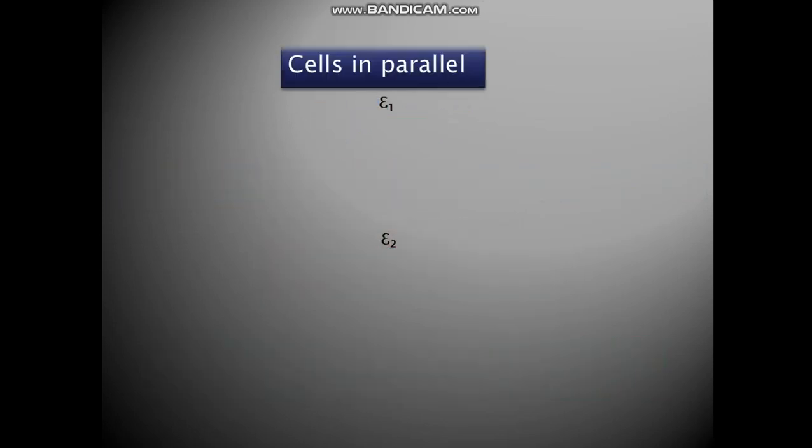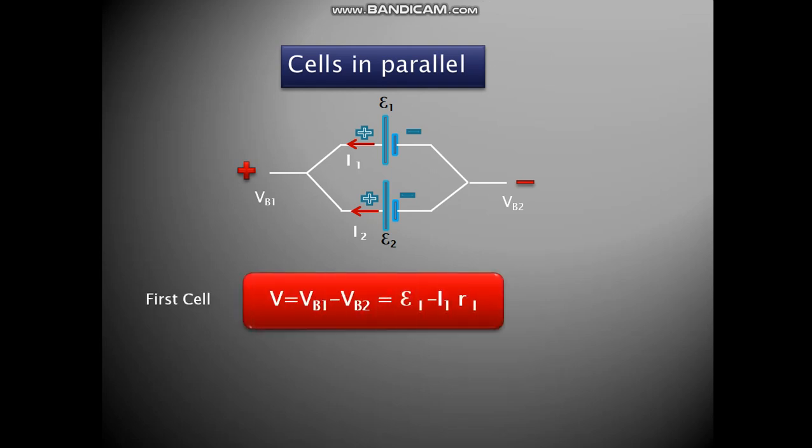Now let us connect them in parallel. We have connected the cells in parallel. We have the current I1 and I2. V1 and V2 are the potential differences. For the first cell, since the cells are in parallel, the V is same, the potential difference is same. V is equal to V1 minus V2, which is E1 or epsilon 1 minus I1 R1. So we rearrange the terms to get I1 is equal to E1 minus V upon R1.